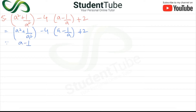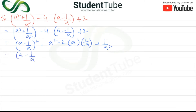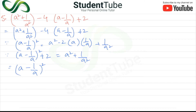Now we will apply a formula here. The formula is: a minus 1 upon a, whole squared, which is equal to a squared minus 2 times a times 1 upon a plus 1 upon a squared. And a minus 1 upon a plus 2 is equal to a squared plus 1 upon a squared. Now we will apply this formula.